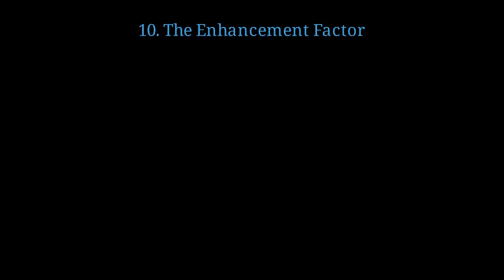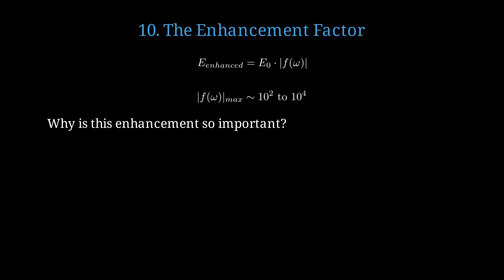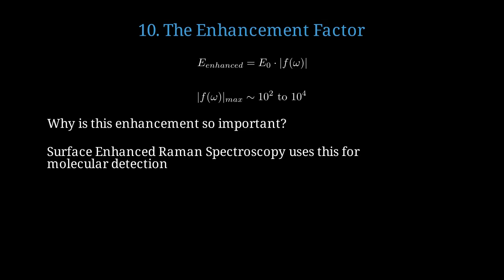One of the most remarkable aspects of surface plasmons is the enormous field enhancement they create. The enhanced electric field E-enhanced equals the incident field E-naught times an enhancement factor F of omega. At resonance, this enhancement factor can reach values from 100 to 10,000, meaning the field near the nanoparticle surface is up to 10,000 times stronger than the incident field. Surface-enhanced Raman spectroscopy exploits this enhancement to detect and identify single molecules. Since Raman intensity is proportional to field to the fourth power, the overall enhancement can reach 10 to the 8, or even 10 to the 12, making single molecule detection possible.